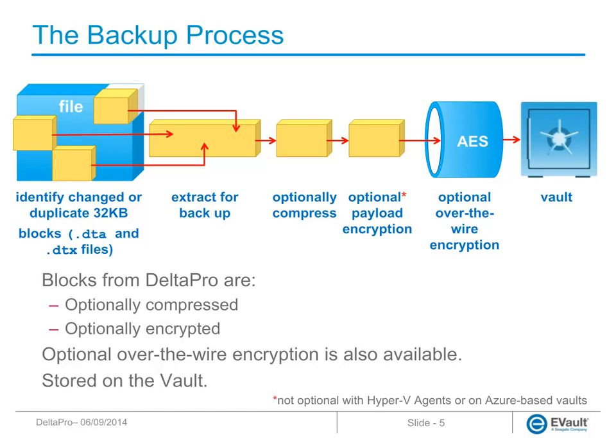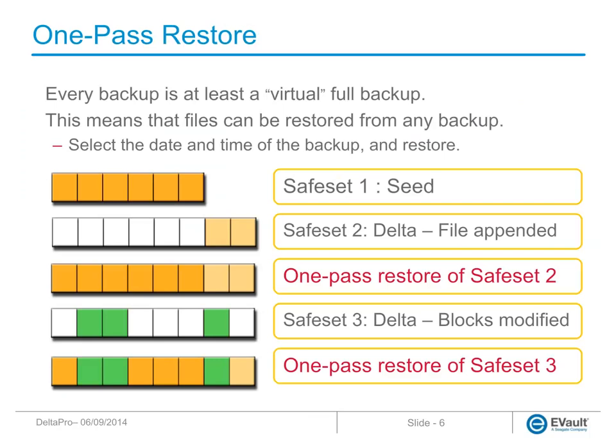Optional over-the-wire encryption is also available and uses AES 128-bit encryption. Conceptually it is similar to using SSL, but it is not SSL. Its use is advised when the network between the agent and the vault is not a private, secured network.